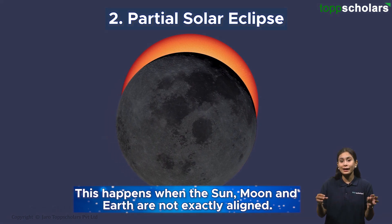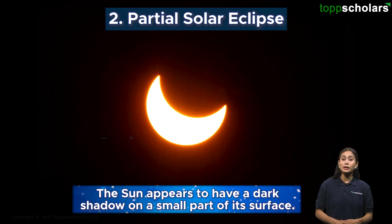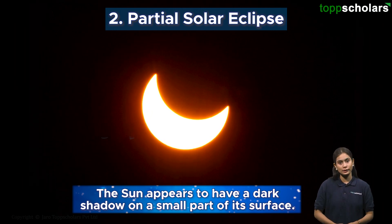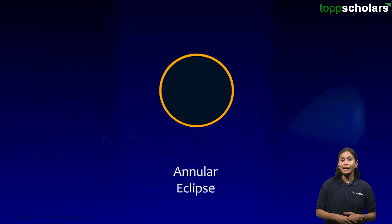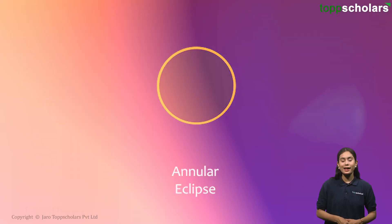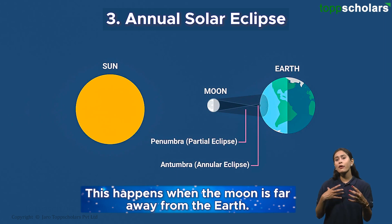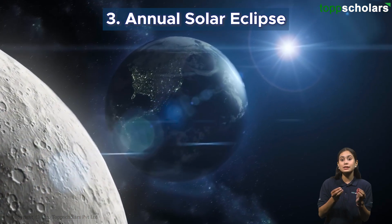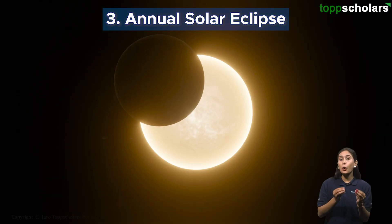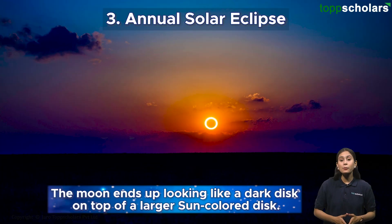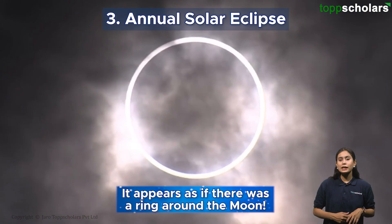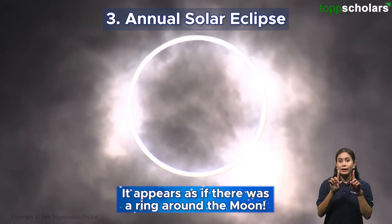Next is the partial solar eclipse, which happens when the Sun, moon, and Earth are not exactly aligned. The Sun appears to have a dark shadow on a small part of its surface. Third is the annular solar eclipse, which occurs when the moon is far away from the Earth. Because the moon appears smaller, it does not block the Sun entirely, and ends up looking like a dark disk on top of a larger Sun-colored disk, creating a ring appearance.